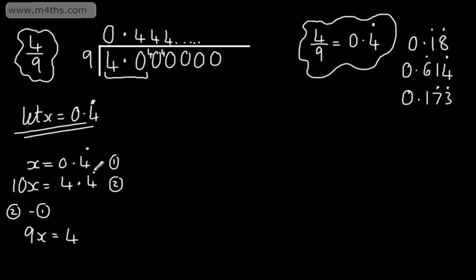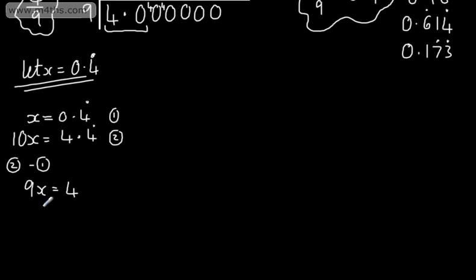4.4 recurring minus 0.4 recurring is just going to leave me 4. Remember, after the decimal, it's 4, 4, 4 forever. So all we would do is subtract away, which would give us 0. At this stage now, we can divide both sides of the equation by 9. We can say if x is equal to 4 over 9, therefore now 0.4 recurring is going to be equal to 4 over 9. And that has shown exactly what we expected.